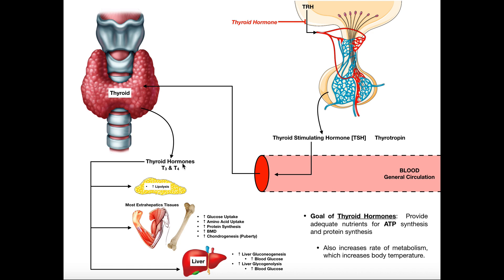The overall goal of thyroid hormones is to provide adequate nutrients for ATP synthesis and protein synthesis. They do this by stimulating adipose tissue and the liver to increase nutrients in the blood, then stimulating other tissues to take up those nutrients, run them through metabolic pathways to generate ATP, and use that ATP to perform work like protein synthesis. In the next video, we'll be discussing cortisol functions.